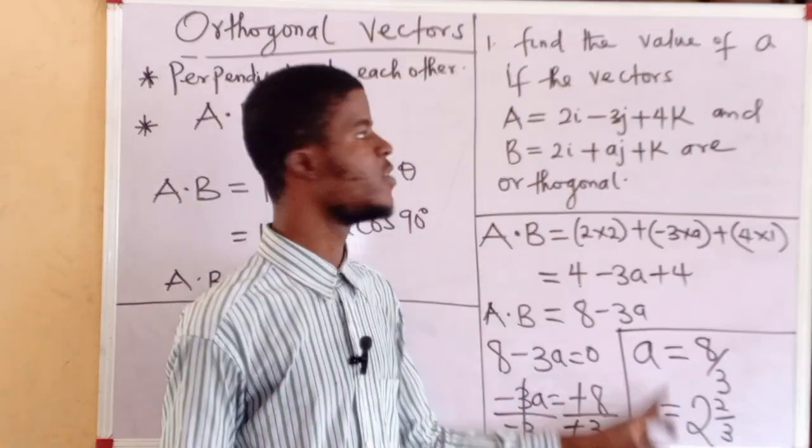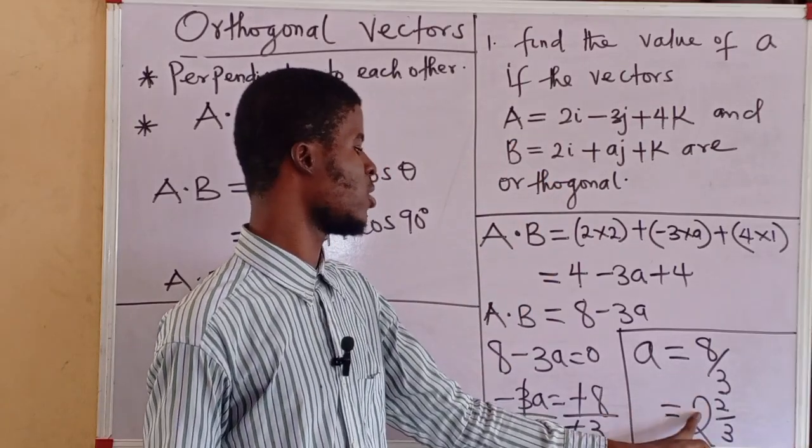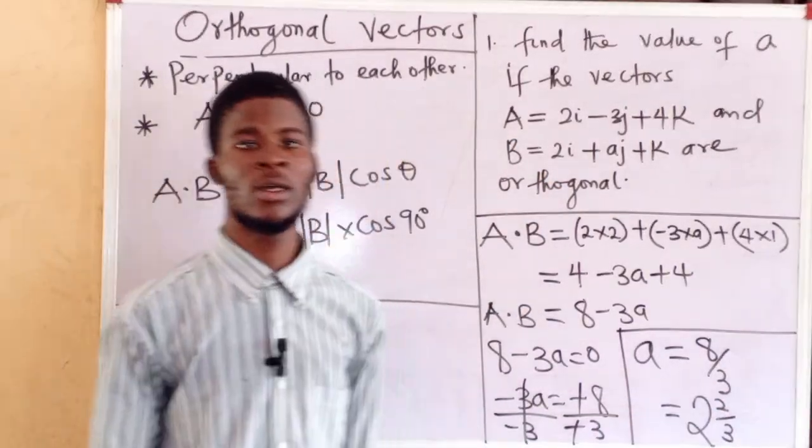So, the value of A for which these two vectors A and B are orthogonal is 8 over 3, or 2 whole number 2 over 3.